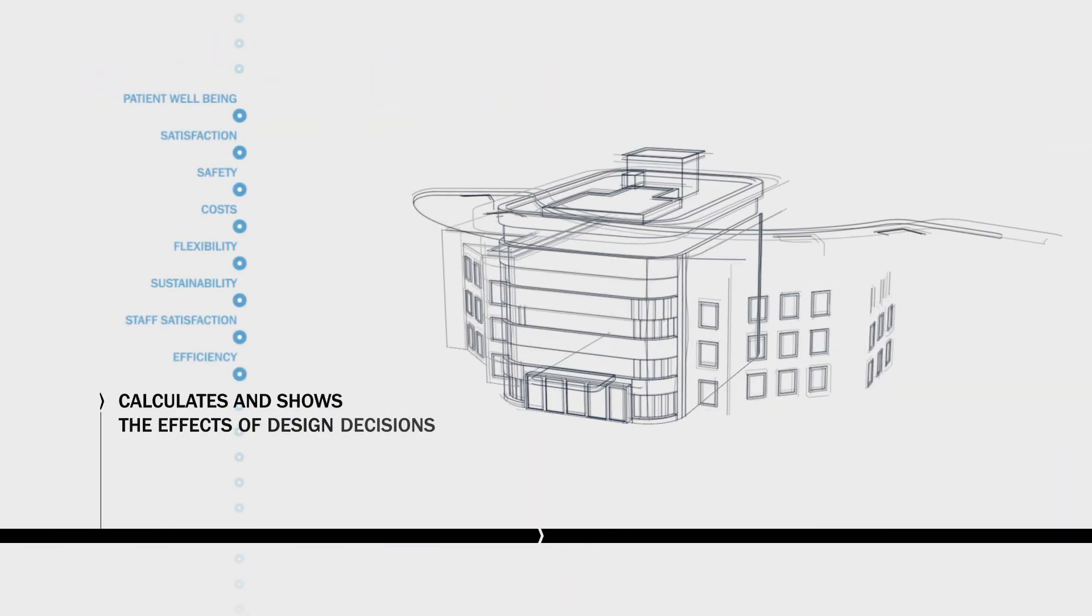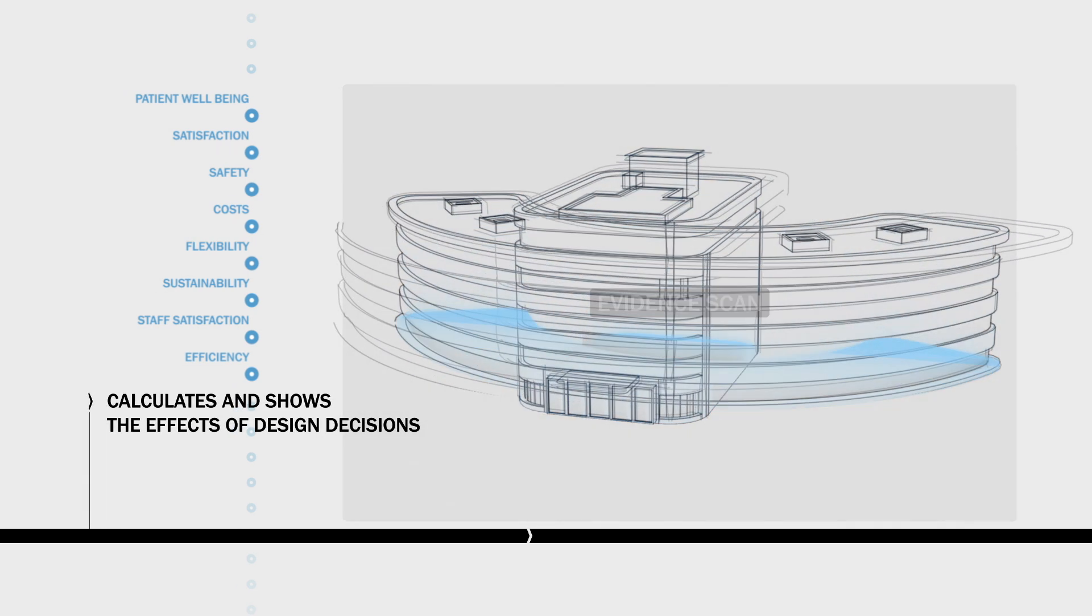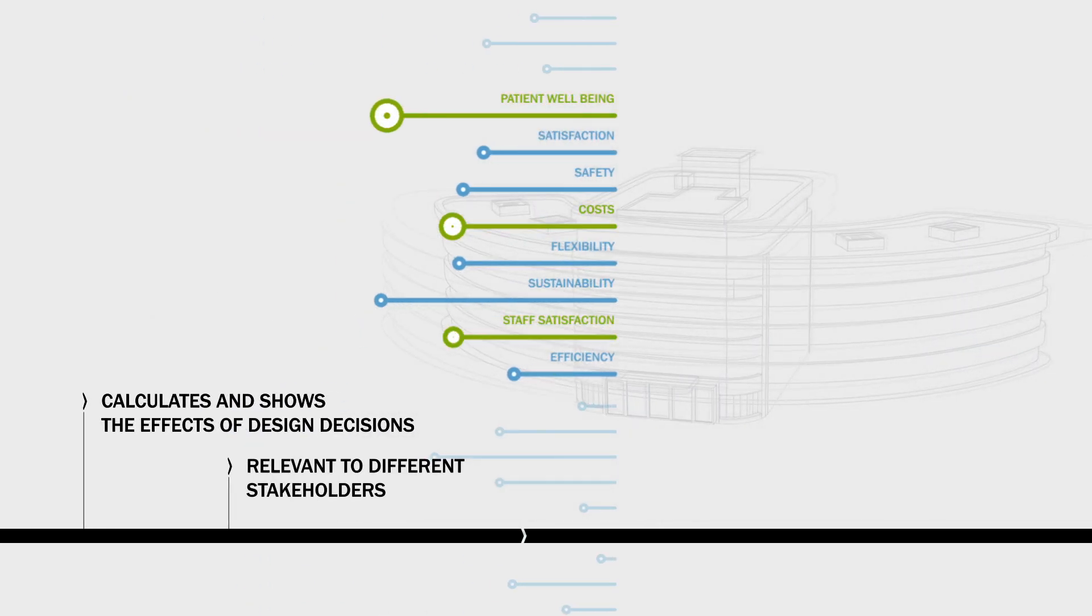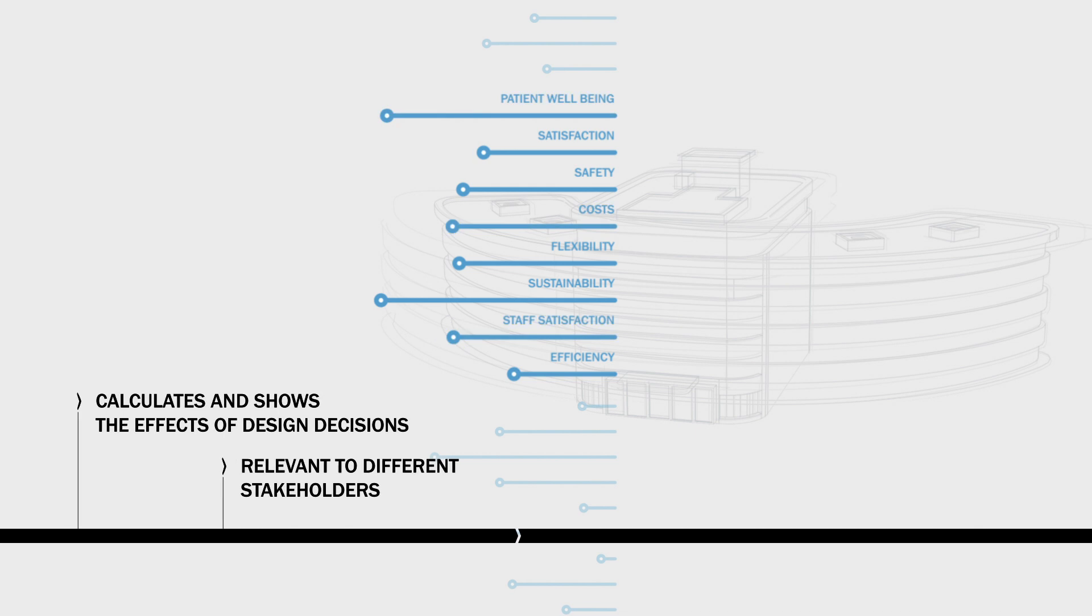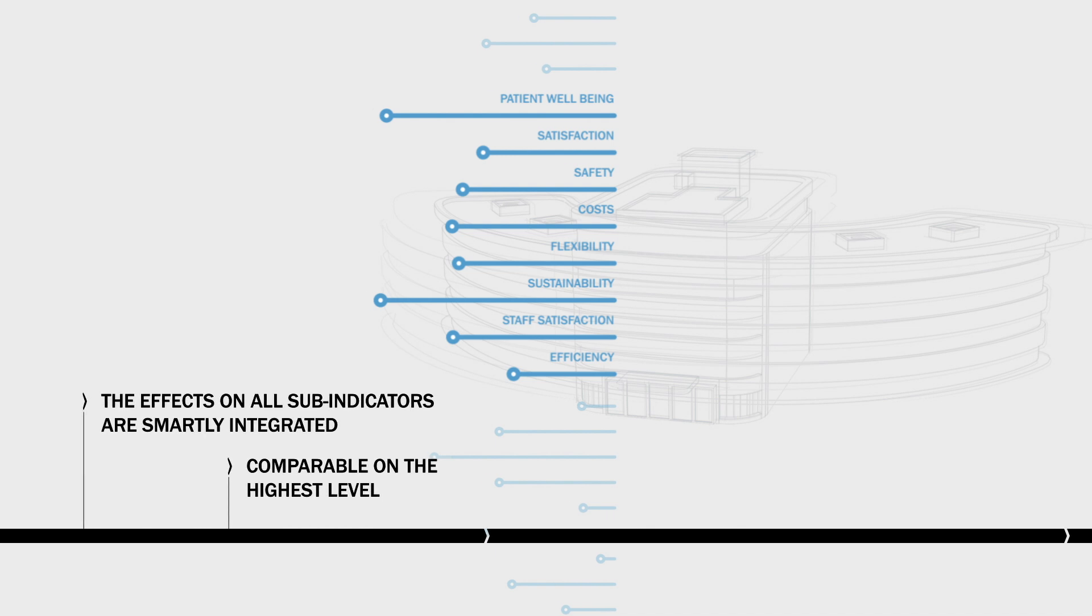TNO have developed a model that calculates and shows the effects of design decisions on key performance indicators relevant to different stakeholders. Each indicator is built up from various sub-indicators, but the effects on all sub-indicators are smartly integrated in such a way that the effects are comparable on the highest level.